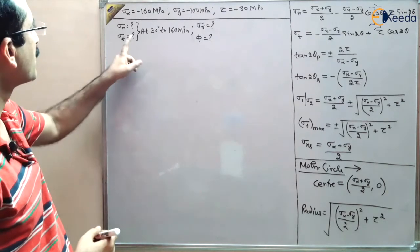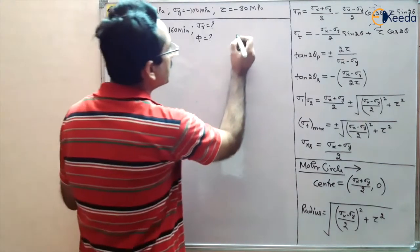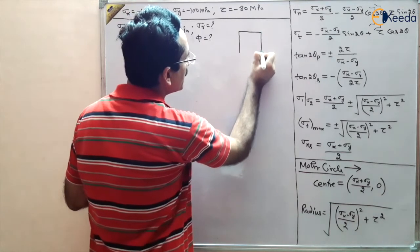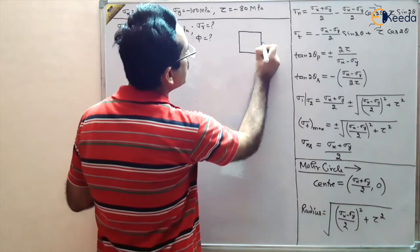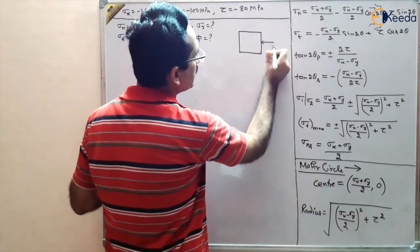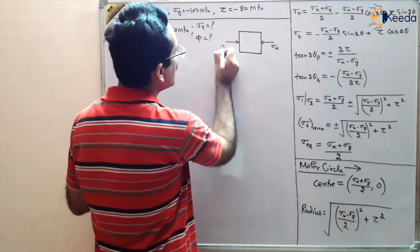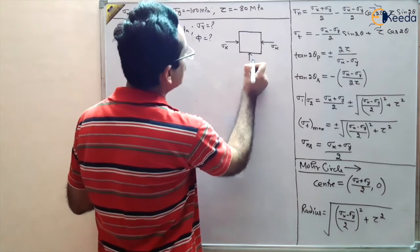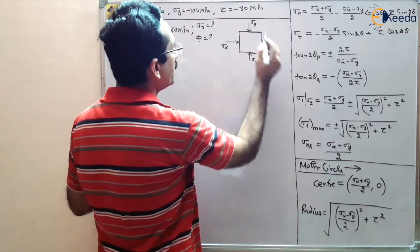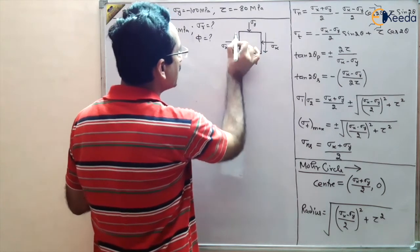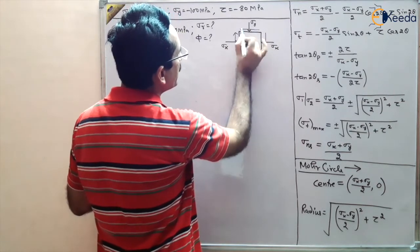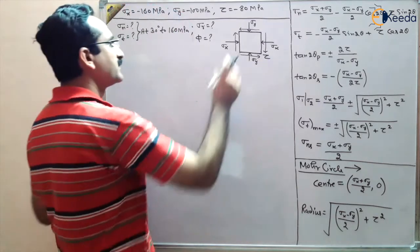First, let us draw the stress element. This is our stress element where sigma_x is compressive, sigma_y is also compressive, and tau is taken as negative. This is the negative sign convention for shear stress we are using. This is the stress condition.